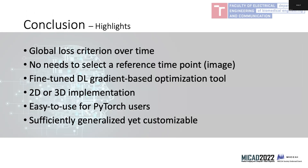In conclusion, we have developed a novel implementation algorithm for image registration with global loss regression. We have been using it since October 2021 and we do not need to select a target reference time point. It is customizable and easy to use, especially for PyTorch users. The source code is available on GitHub with two versions for 2D and 3D data. Thank you for your attention.